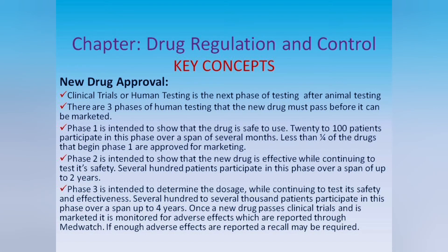Clinical trials, or human testing, is the next phase after animal testing. There are three phases of human testing that the new drug must pass before it can be marketed. Phase 1 is intended to show that the drug is safe to use. 20 to 100 patients participate in this phase over a span of several months. Less than one quarter of the drugs that begin Phase 1 are approved for marketing.